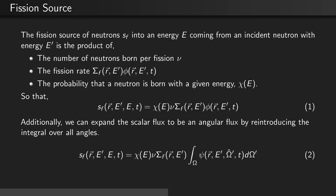We can expand this expression to reobtain the angular flux by simply integrating over all incident neutron angles, omega prime. Therefore the source of fission neutrons S_f as a function of position, E', E, and t is equal to chi(E) times nu times the macroscopic fission cross-section as a function of E' times the integral over all omega prime of the angular flux as a function of position, the incident neutron energy, the incident neutron direction, and time.